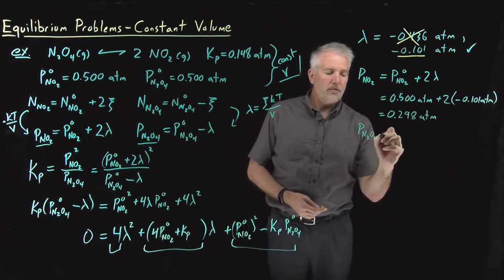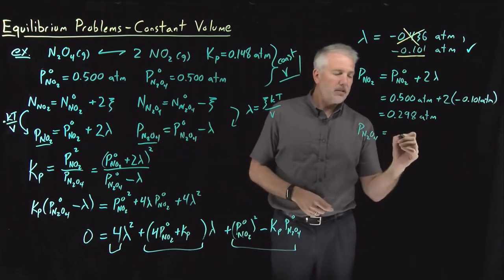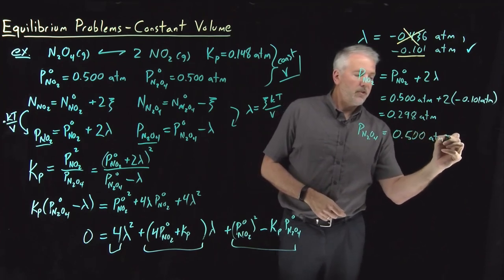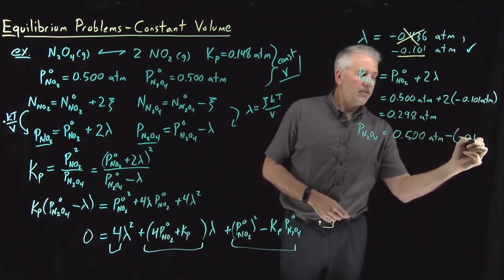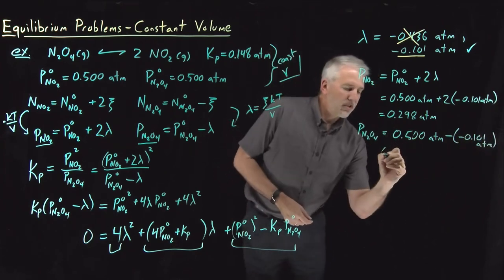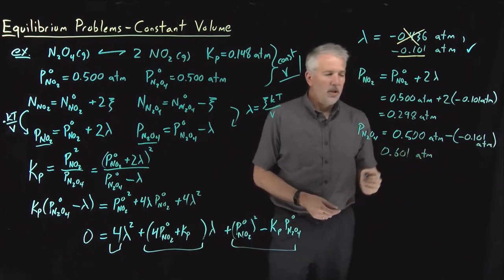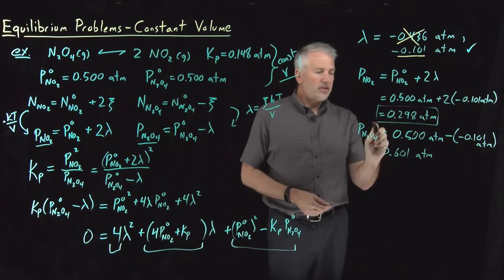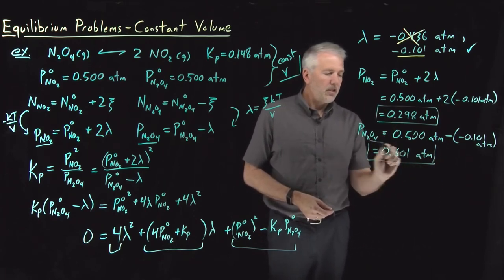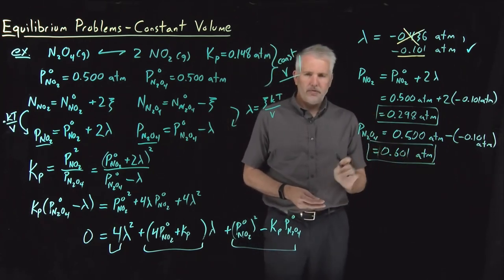The pressure of N2O4, likewise, is its initial pressure minus lambda, 0.5 atmospheres minus a negative 0.101 atmospheres. That gives me 0.601 atmospheres. So these are the answers to the question I posed at the beginning. What is the partial pressure of NO2 and N2O4? It's these two numbers. So we've solved the problem.